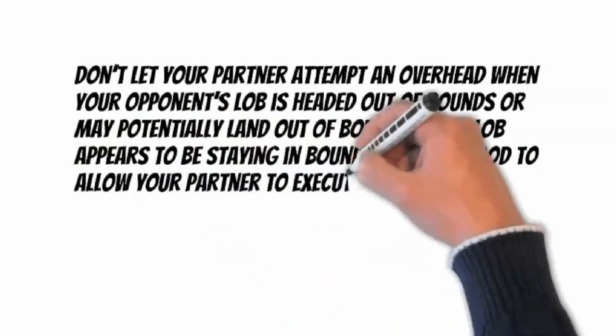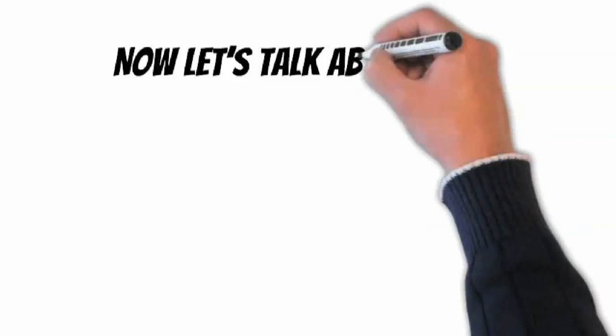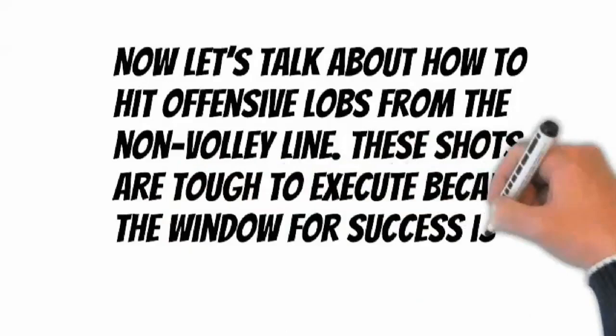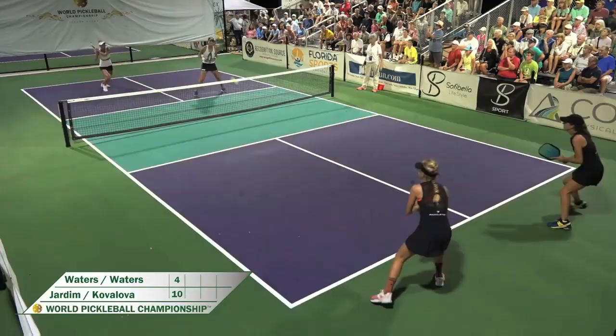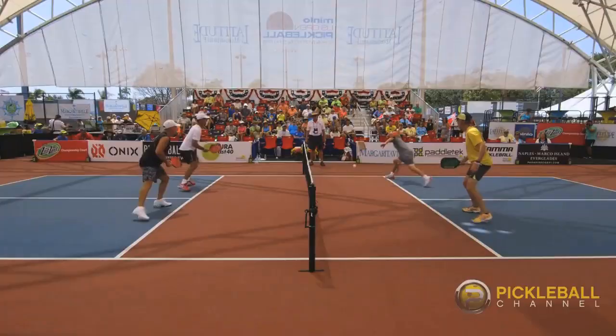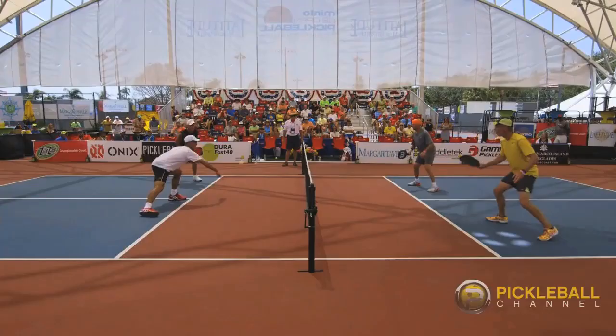Now let's talk about how to hit offensive lobs from the non-volley zone line. These shots are tough to execute because the window for success is tiny. Most offensive lobs that don't fly out of bounds can be smashed back if the defender takes a step or two back and then executes the overhead.